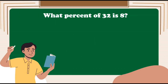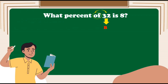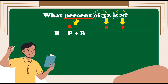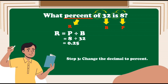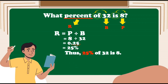Let us try another one. What percent of 32 is 8? First step: identify the missing term. Since 32 comes after the word 'of,' that is our base. And 8, which comes after the word 'is,' is our percentage. The missing term is the rate. Second step: write the formula — Rate is equal to percentage divided by base. We divide 8 by 32, and the answer is 0.25. Third step: change the decimal to percent by moving the decimal point two places to the right and affixing the percent sign. The answer is 25%. Thus, 25% of 32 is 8.